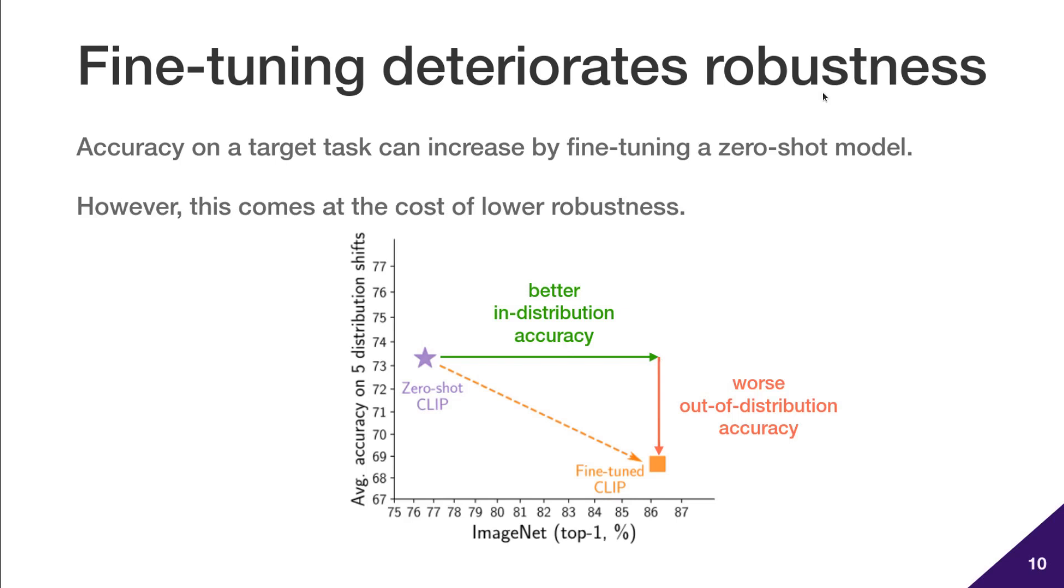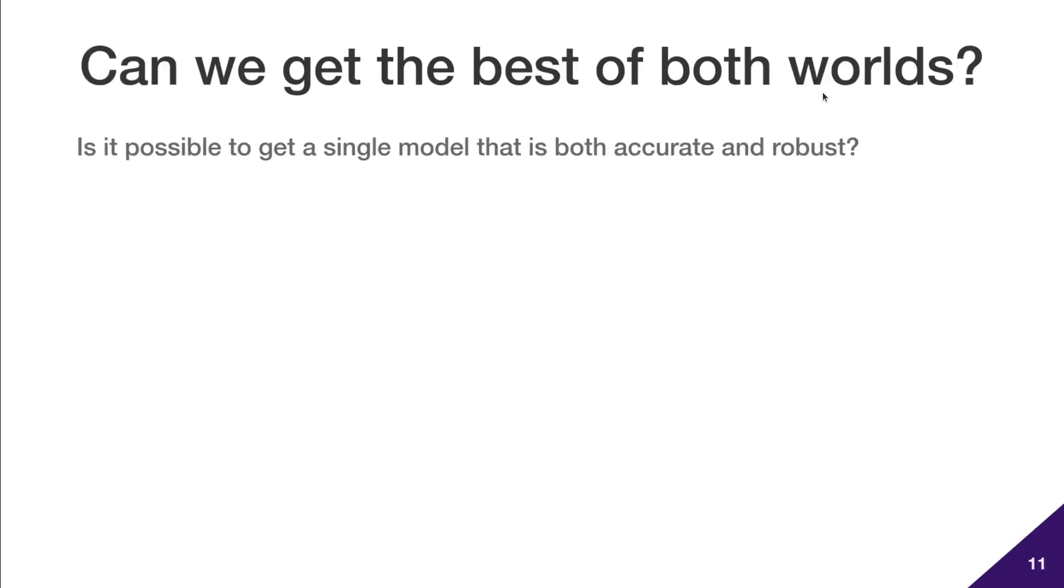In our work, we ask a simple question. Can we build a single model that is the best of both worlds being both accurate and robust? In other words, is it possible to fine-tune without deteriorating robustness to distribution shifts?